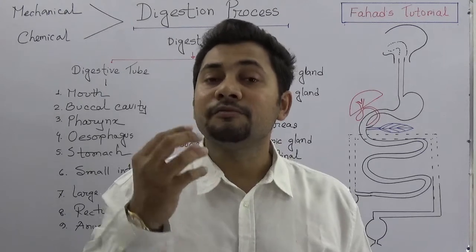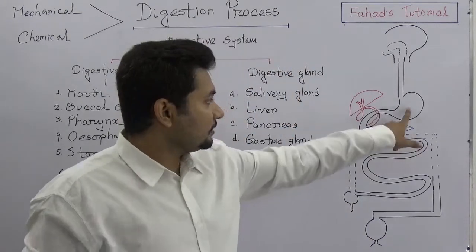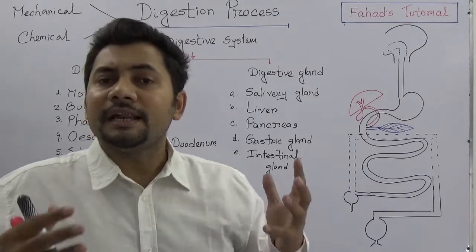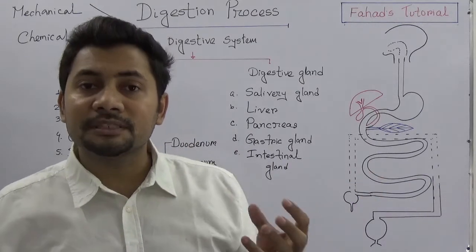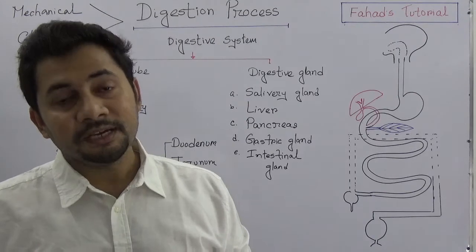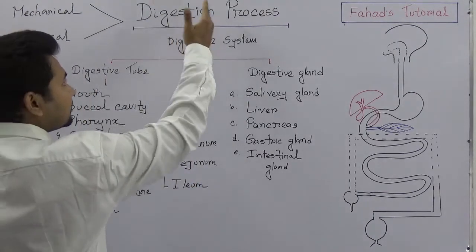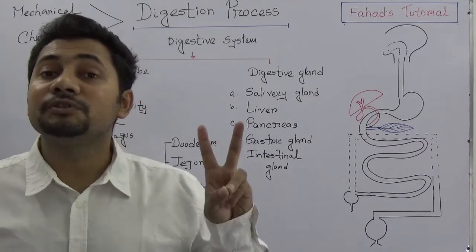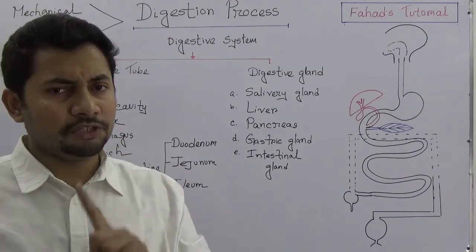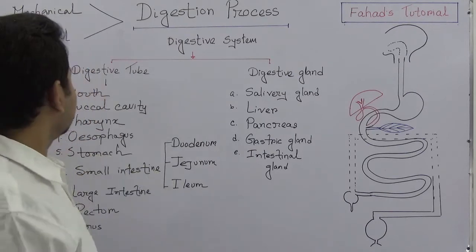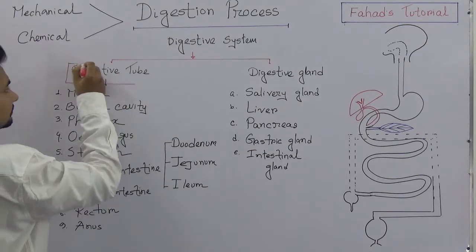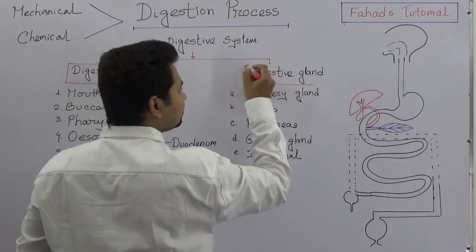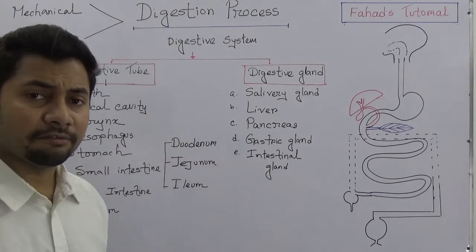When food particles go to the stomach, which is a bag-like organ, reactions happen inside — that is the chemical process. Food particles are turned into absorbable substances. The digestive system as a whole is divided into two parts: the digestive tube, also called the alimentary tube, and the digestive glands, which secrete enzymes and hormones to assist the process.